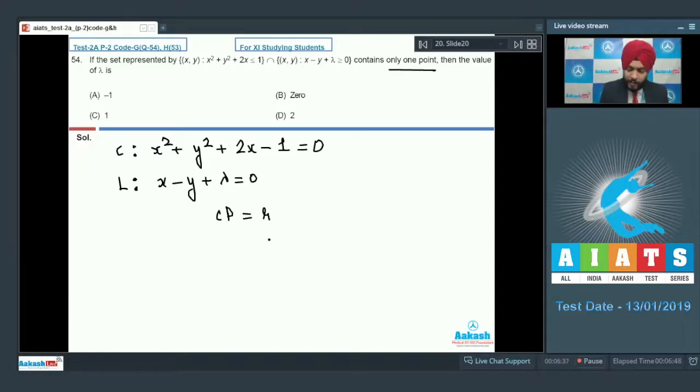Students, what is the condition? C intersection L contains only one point. How is this possible? This is possible only if the line is a tangent to the circle. Let us apply the concept Cp equals R. Cp is the perpendicular distance from the center of the circle to the line. R is the radius of the circle. Center is minus 1 comma 0. So minus 1 minus 0 plus lambda modulus divided by root 2 equals the radius of the circle, which is root 2.